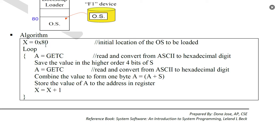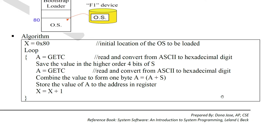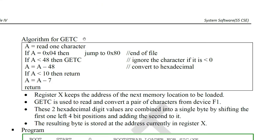Register X holds value 80 initially. Then X is incremented for the next byte. This process continues, with X being updated each iteration through the loop.